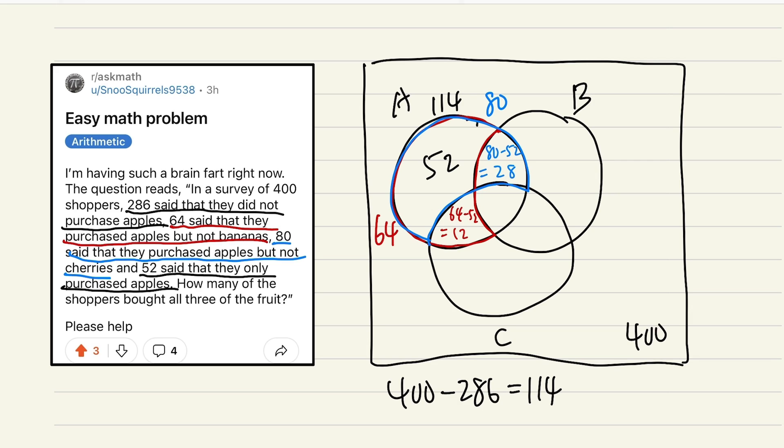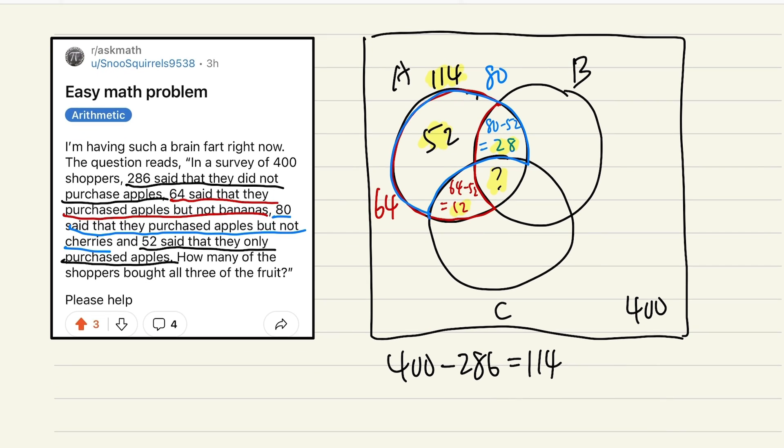Now finally, we will need to know how big this is. But remember, earlier we mentioned this number plus this number plus that number plus this number, they all have to be added to be 114. So to figure out the question mark, all we have to do is it must be 114 minus 52, and then minus 12, and then minus 28. All together we will end up with 22. And there you have it. The answer for this right here is 22 people who bought all three fruits.